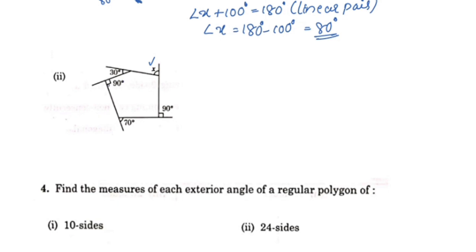We have an interior angle of 1.5 degrees and an exterior angle. The exterior angle sum property tells us the sum of all exterior angles is 360 degrees. We have 5 sides with exterior angles including x. One interior angle is 90 degrees.